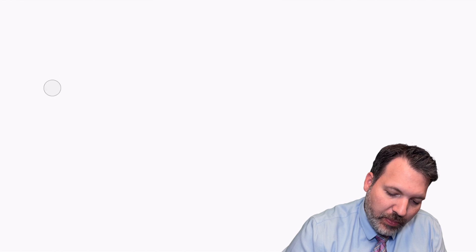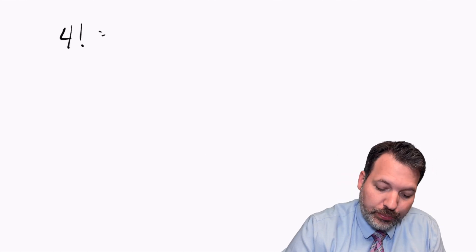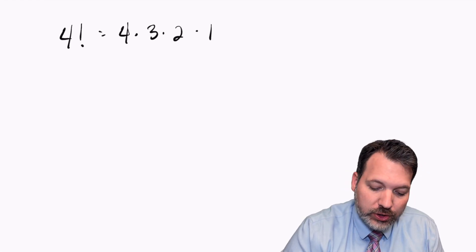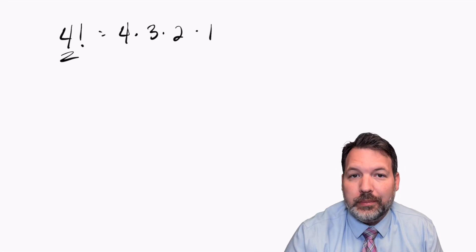To do this, we're going to use a special mathematical tool called a factorial. 4 factorial, for example, is the product 4 times 3 times 2 times 1. So you start at whatever positive integer you have here, count all the way down to 1, and multiply.